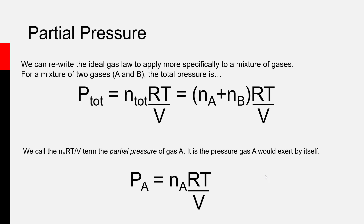Every gas phase mixture has a partial pressure associated with each gas in the mixture. If you add up the partial pressures of all the gases in the mixture, you get the total pressure. If you know how many moles of a gas you have in the mixture, and you know the temperature and the volume, you can calculate its partial pressure through the ideal gas law. This is known as Dalton's Law of Partial Pressures, and it's a really valuable tool when dealing with mixtures of gases.